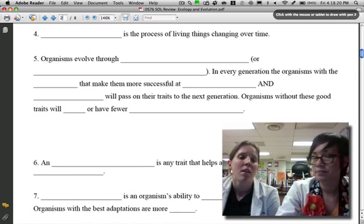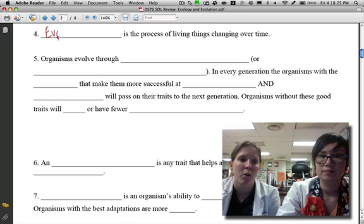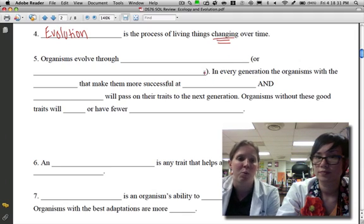Number four. Now we're going to start talking about evolution. Evolution is the process of living things changing over time. You want to underline that word change, it's a key word.